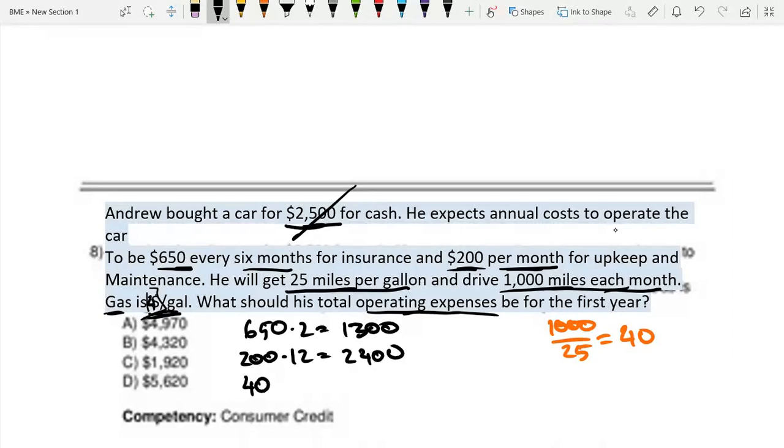Yes, 40 gallons per month, and he has to pay $4 per gallon. So that's times 4. And it's for a year, so that's times 12. So that equals 40 times 4 times 12 is 1,920.